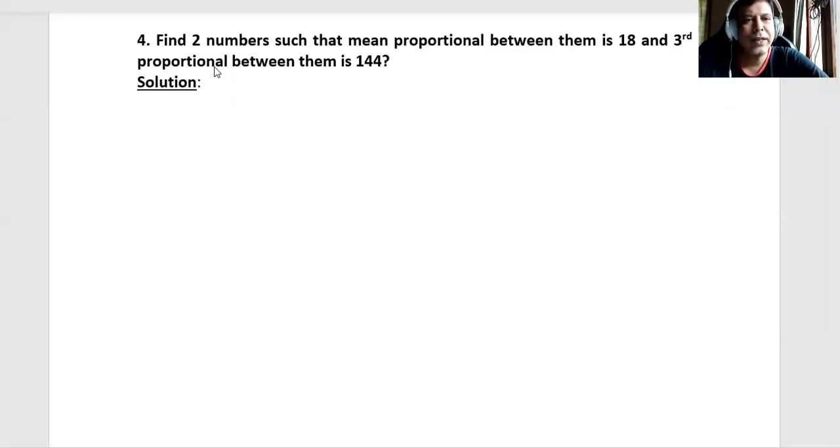Hello everyone, in this question it is said find two numbers such that mean proportional between them is 18 and the third proportional between them is 144. So let us assume the numbers as x, y. Given mean proportional between x and y is 18.